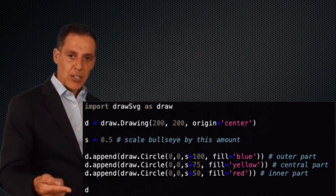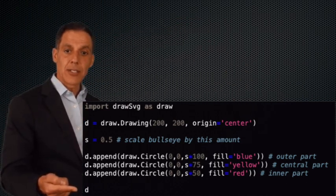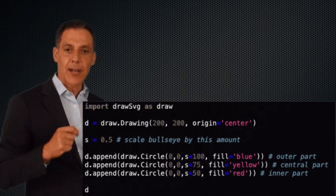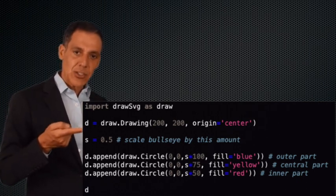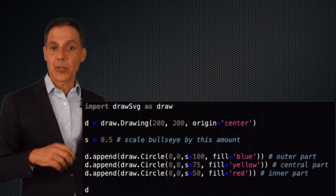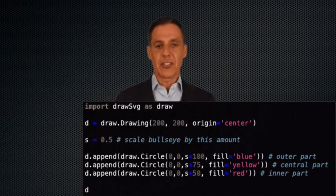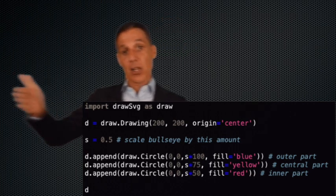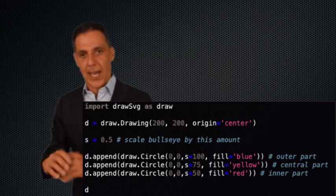Here is my variable S, which is being assigned the floating point value 0.5, a scale factor. One means don't scale. The smaller that number, the smaller the bullseye. The bigger the number, the bigger the bullseye.